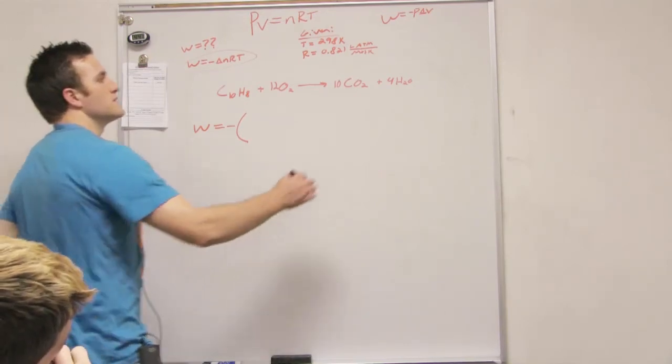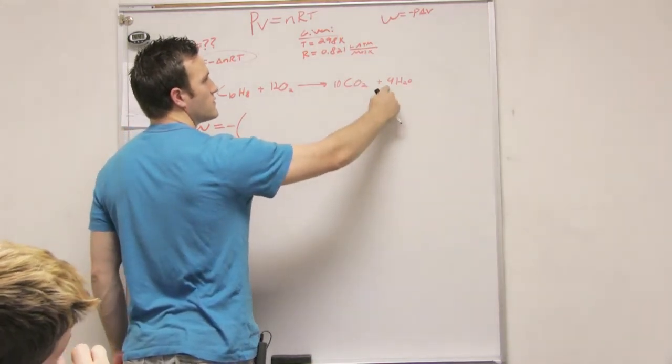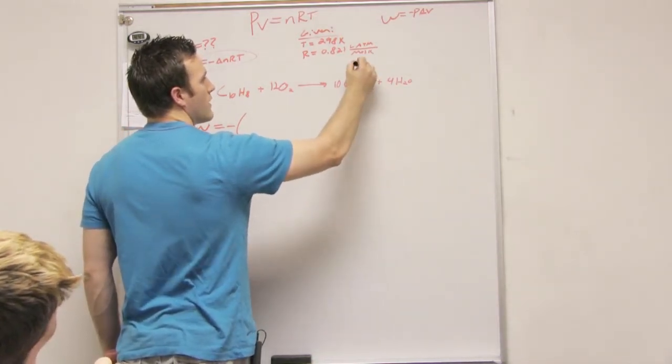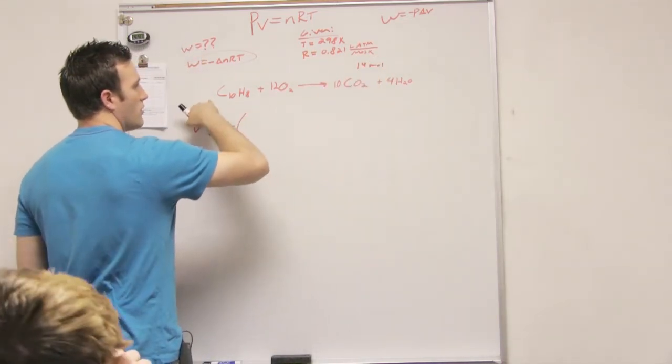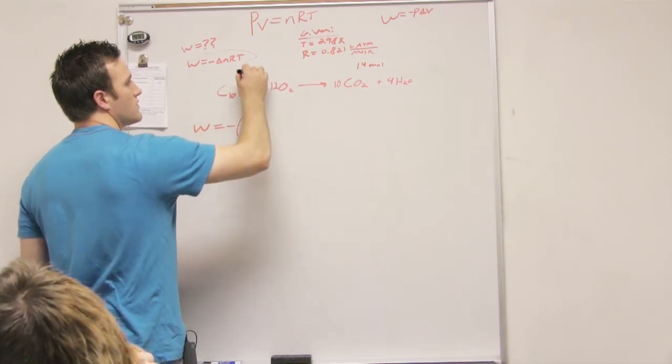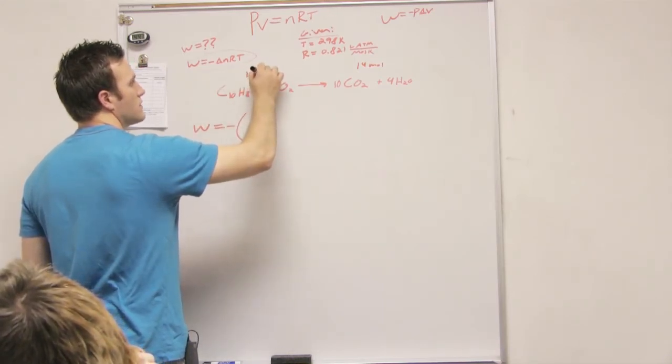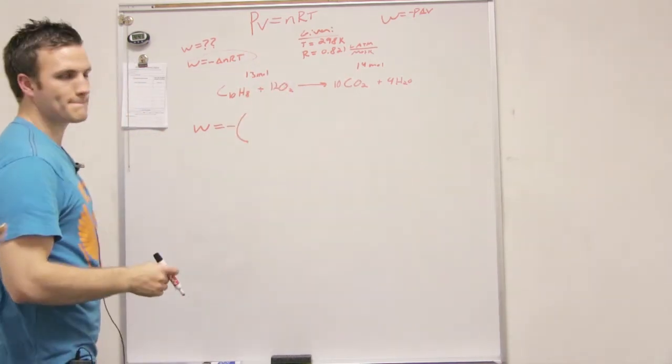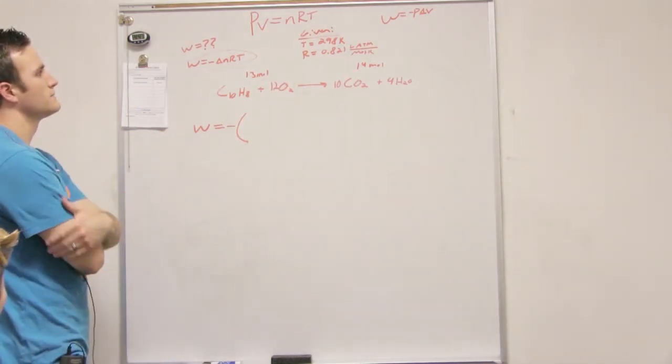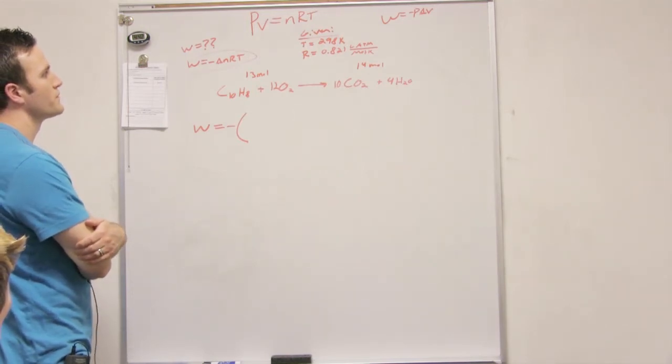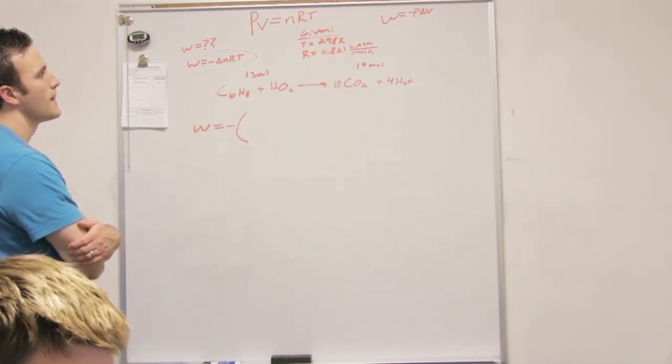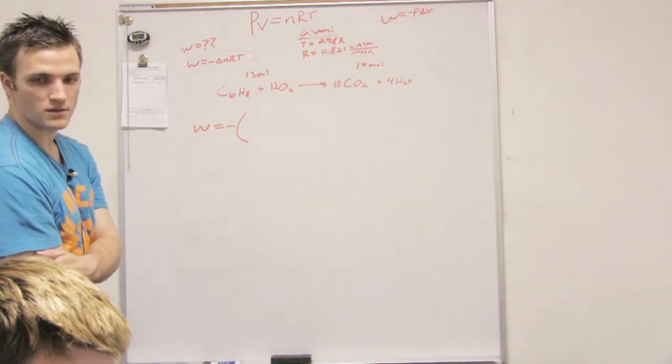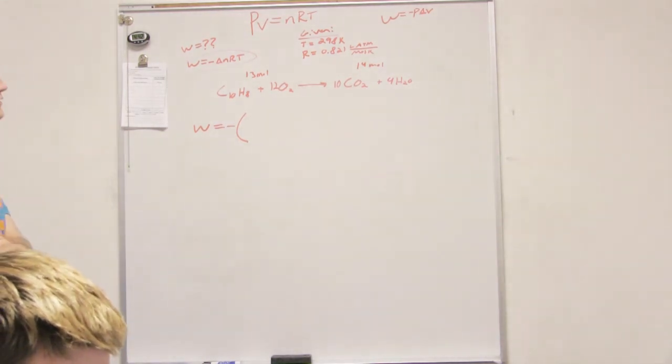So I think what you can do is say you have 10 moles of CO2, 4 moles of water. So 14. So you have 14 total moles on this side. On this side you've got 1 mole of naphthalene, 12 moles of oxygen. So you've got 13 moles on each side. Because we're supposed to end up with a negative 2. Well, a negative 2 for n or just for the answer. For n.